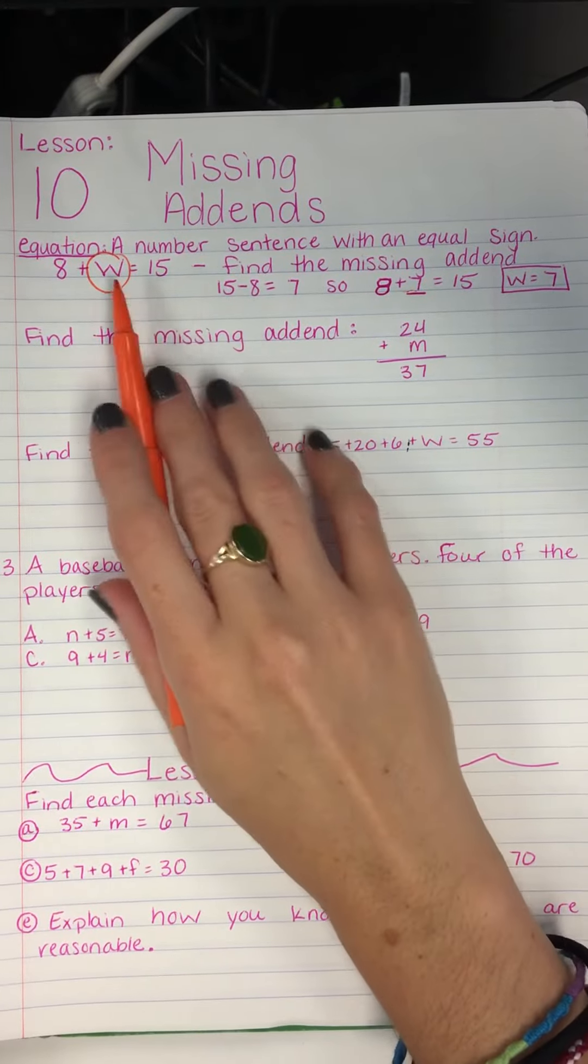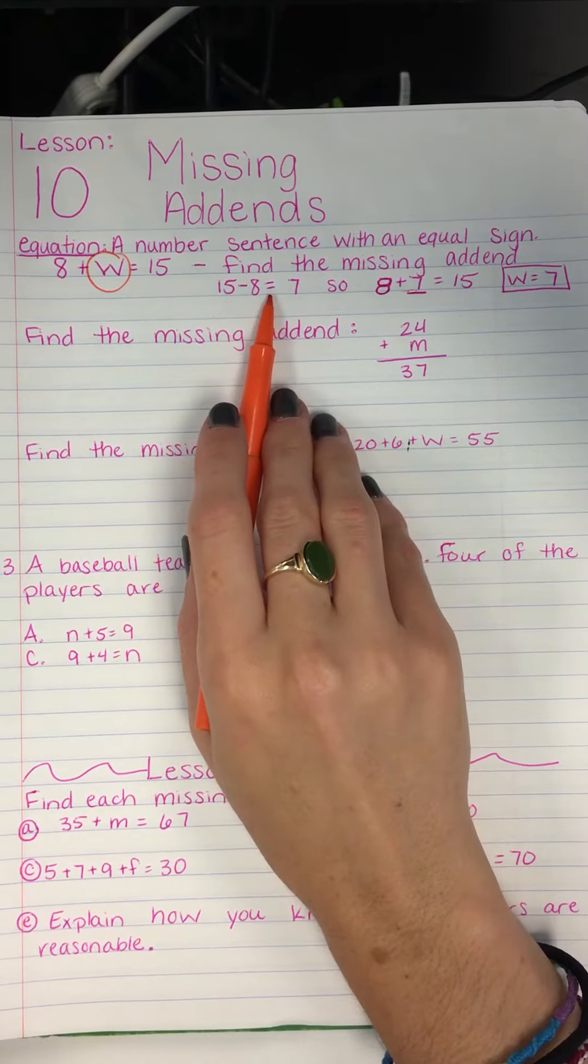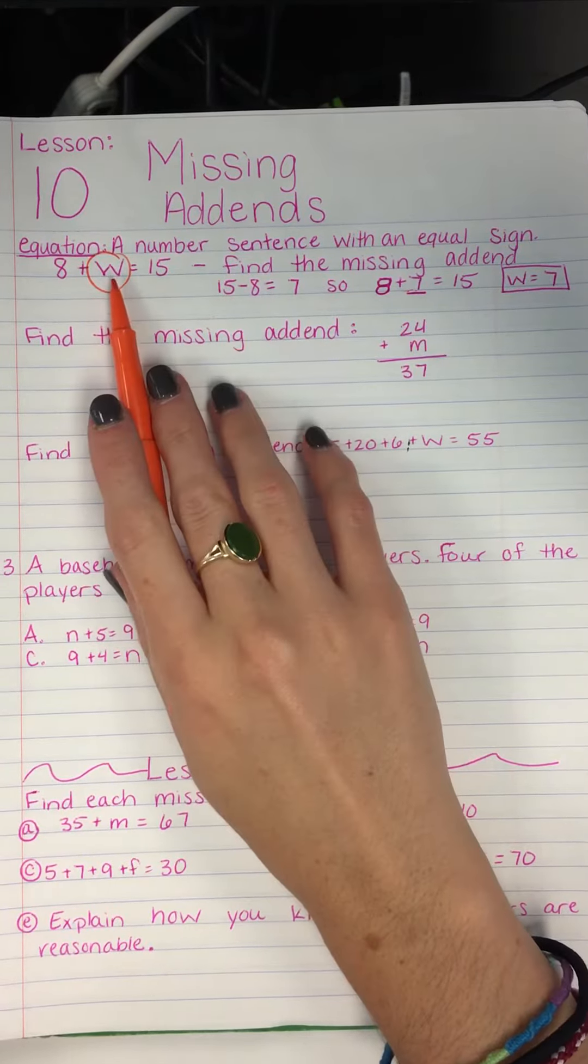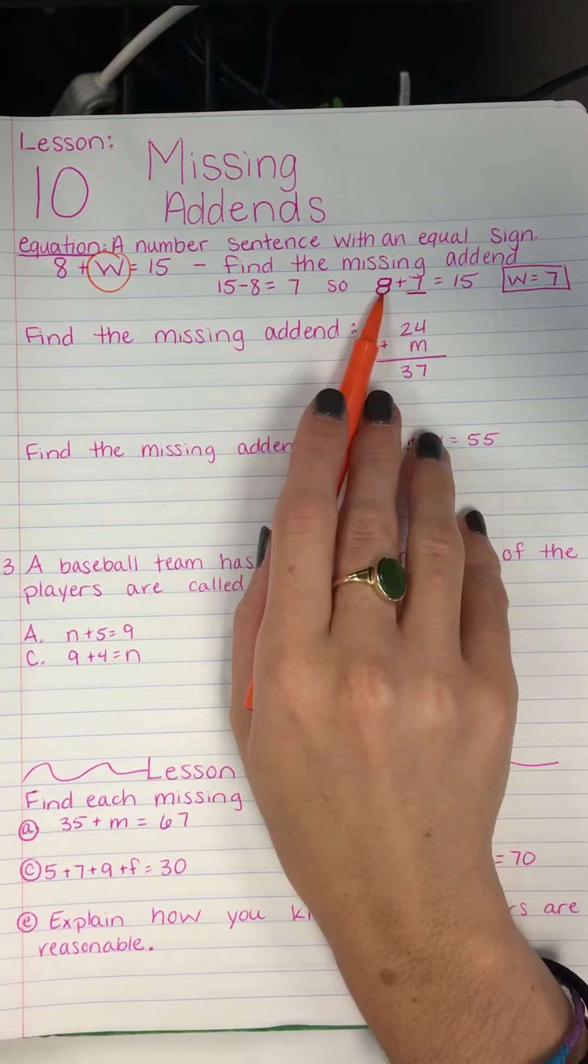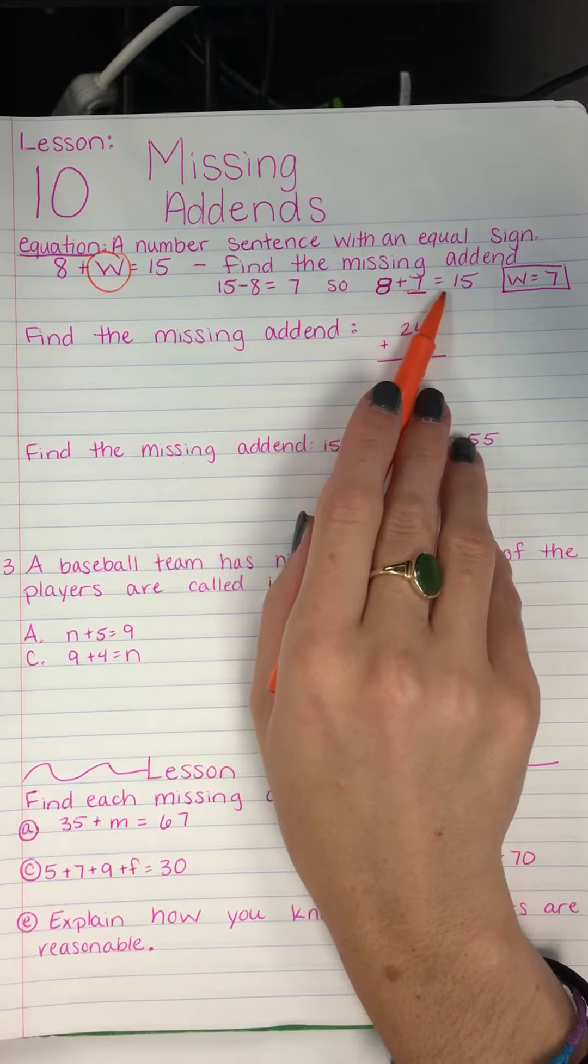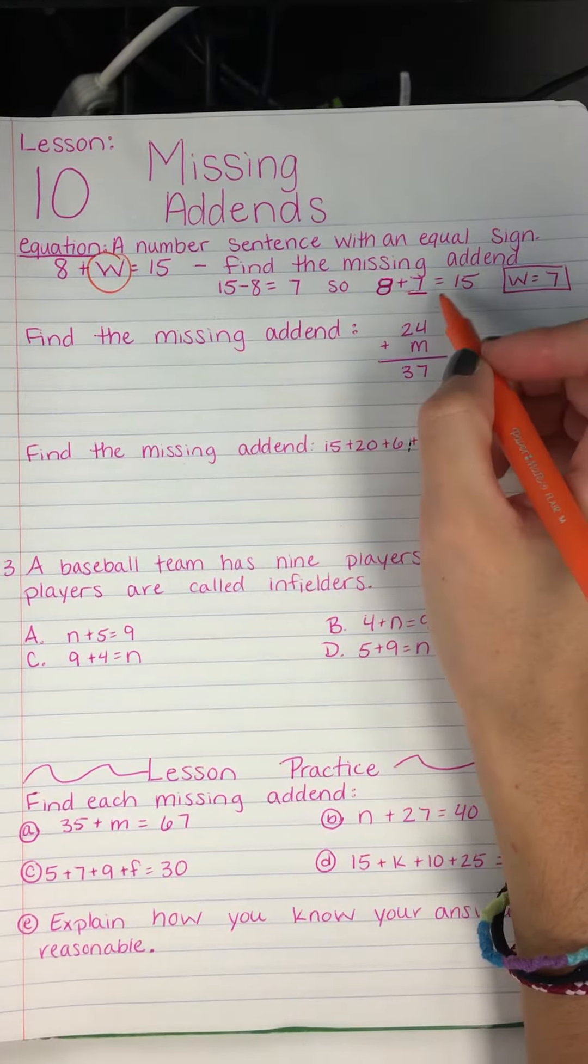So we're going to start by reversing this problem and doing 15 minus 8 equals 7. So we're going to see if that 7 checks out with the W. 8 plus 7 equals 15. That checks out. So W equals 7. Good.